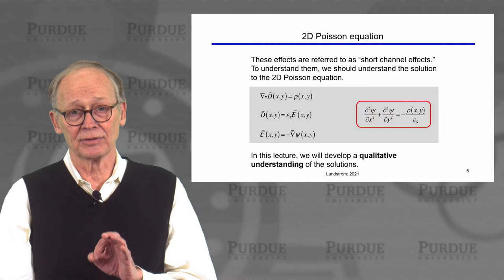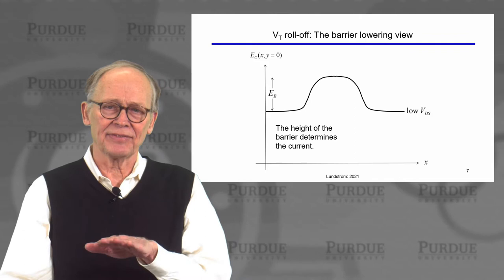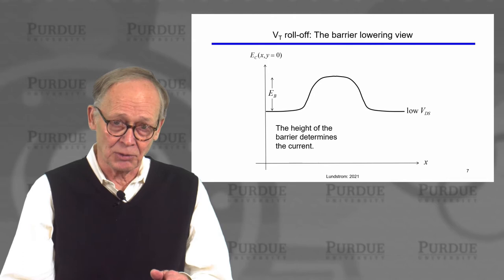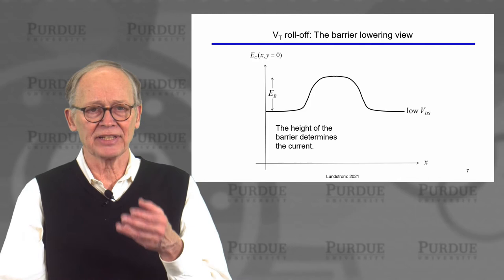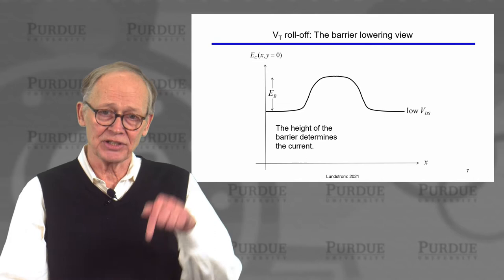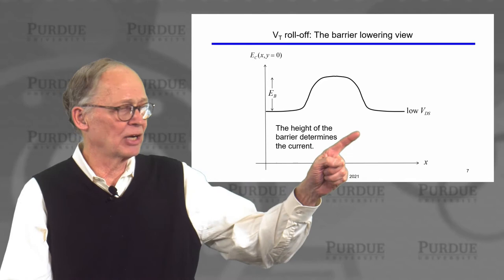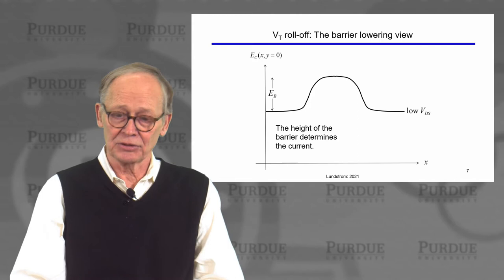In this lecture, our goal is to develop a qualitative understanding of what's going on. Let's look at VT roll-off — the fact that threshold voltage gets smaller as channel length gets smaller or as drain voltage gets higher. That's a consequence of two-dimensional electrostatics. When we discuss things like mobile charge being C_OX(VG - VT), we were doing a one-dimensional solution of the Poisson equation into the depth of the semiconductor. Plotting the energy band diagram along the channel direction helps us understand the two-dimensional effects.